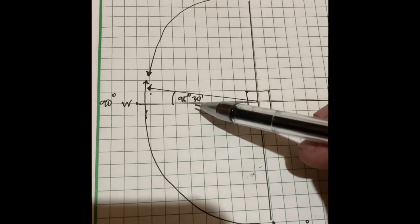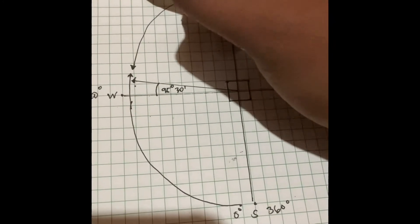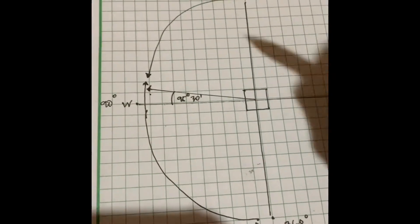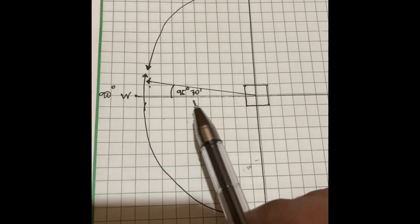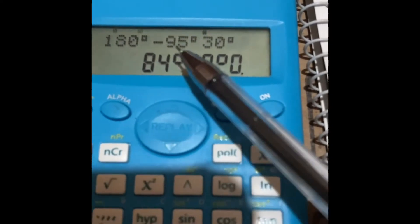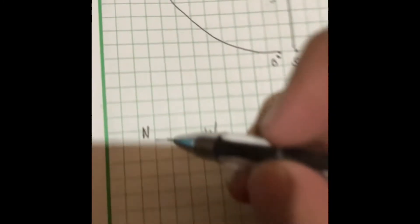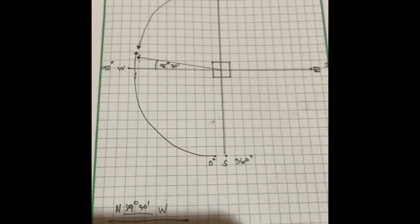Since it's in quadrant 2, we subtract: 180 degrees minus 95 degrees 30 minutes equals 84 degrees and 30 minutes. This is the bearing for number 2.